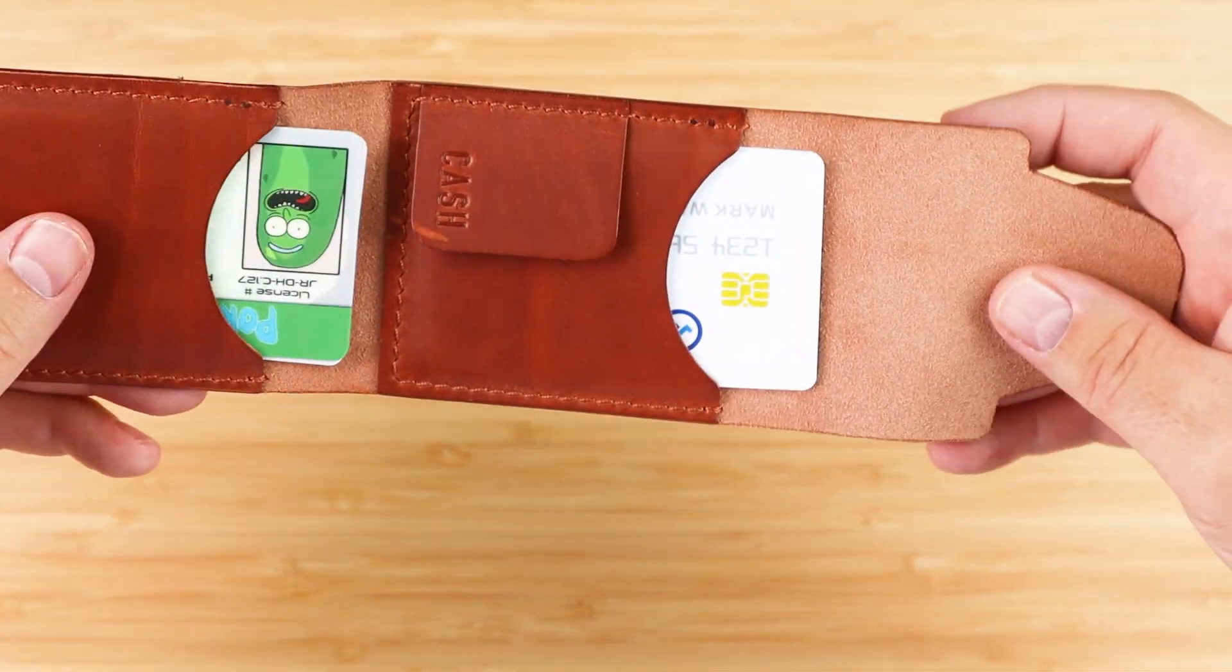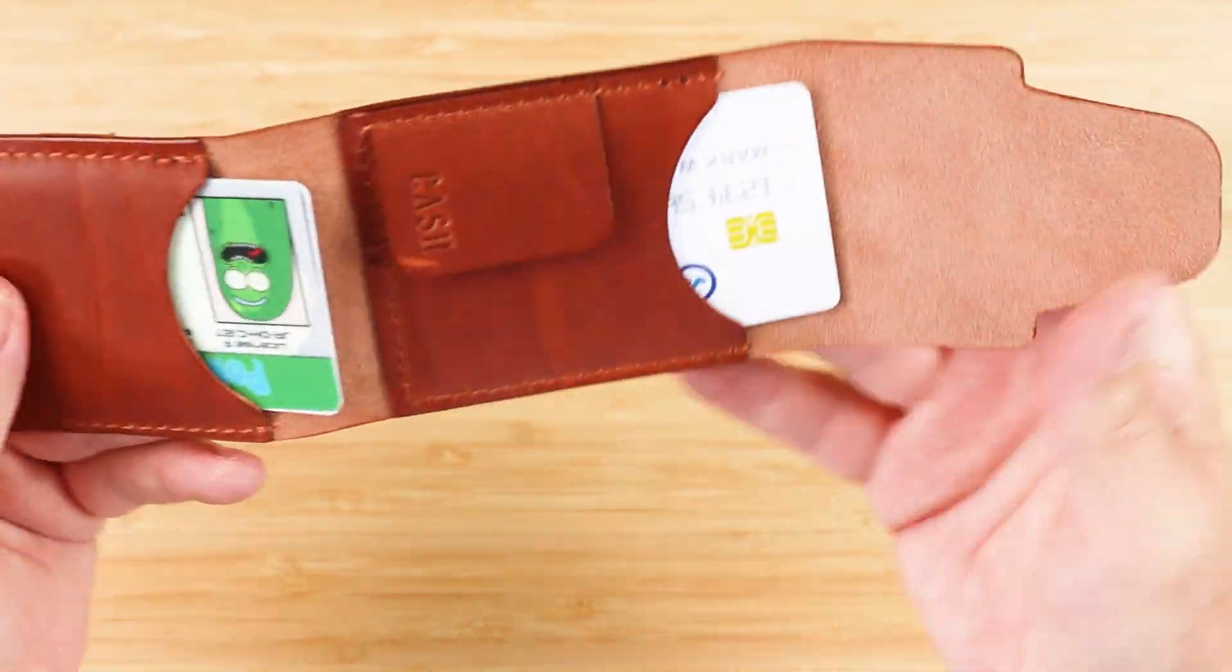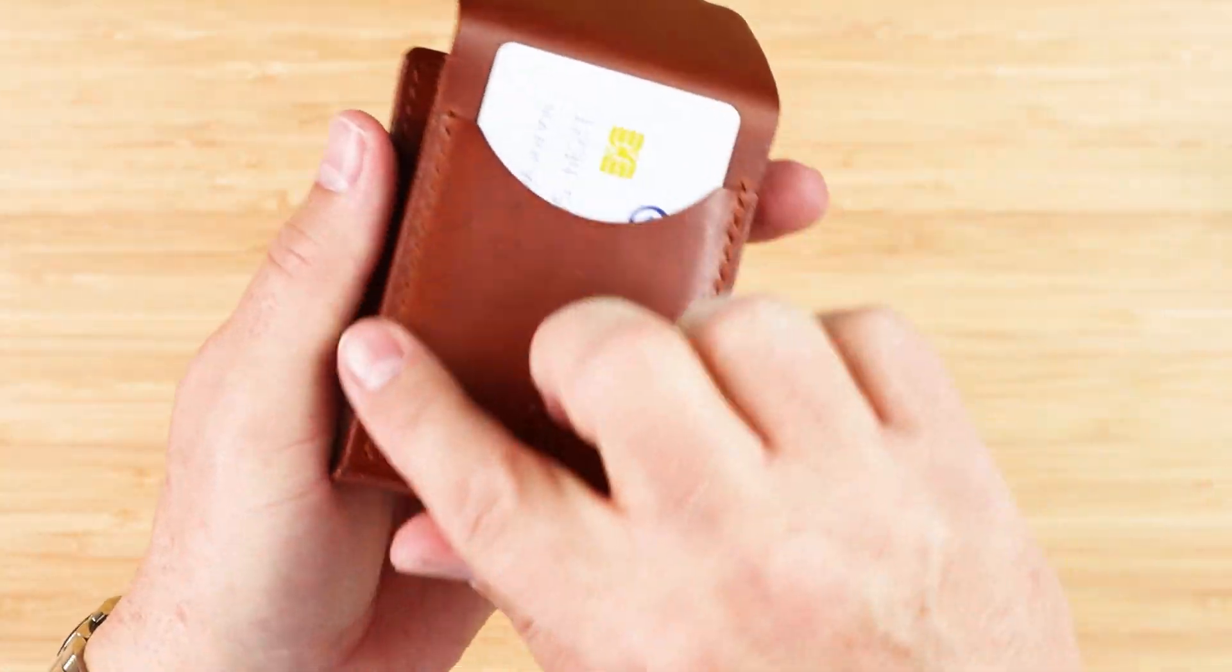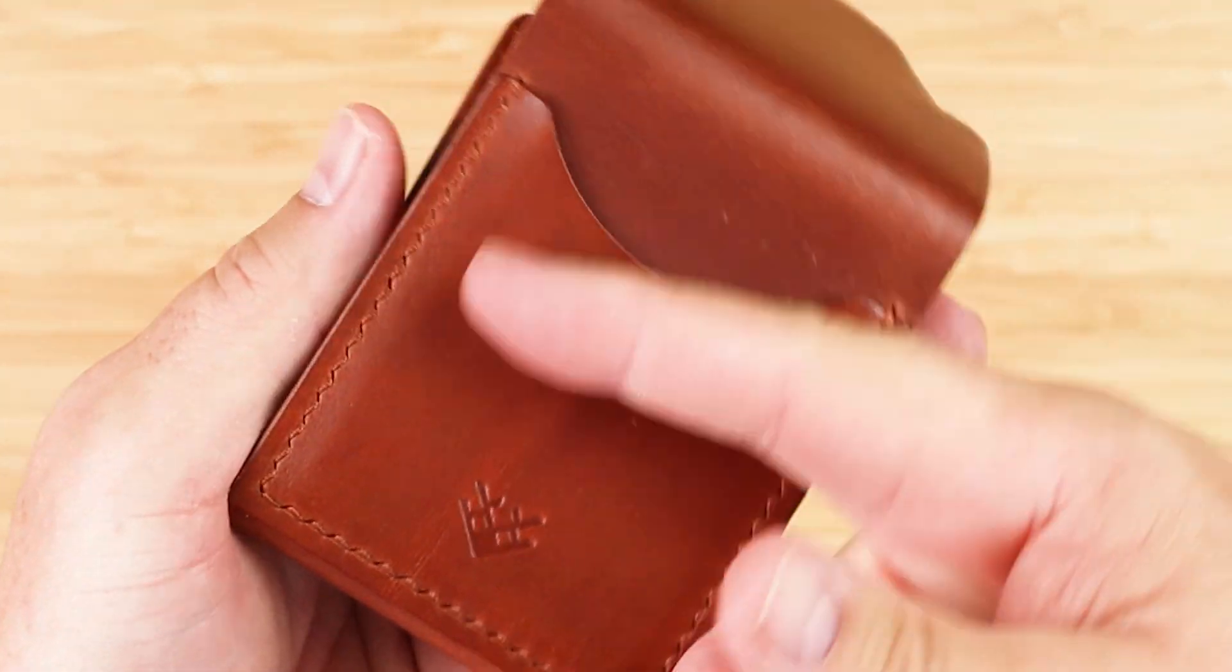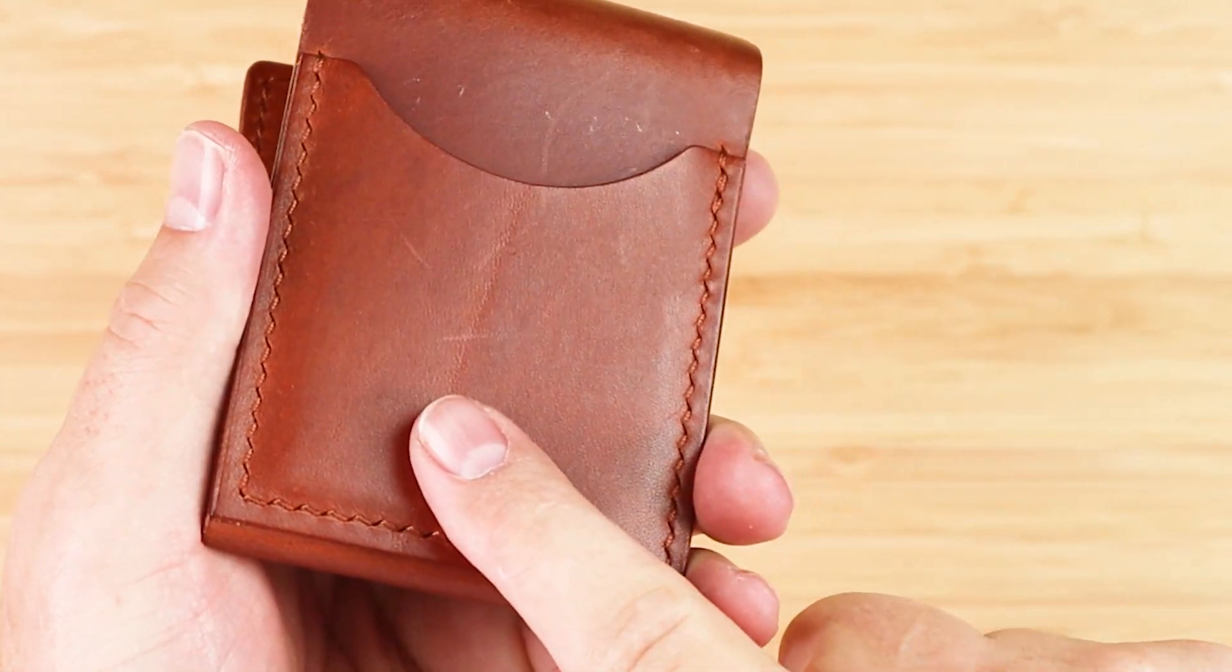The use of a full piece of leather to make the quick access card slot is really nice right here in the exterior. This isn't just a slit that goes in. This is a full piece of leather that's sewn to the exterior.